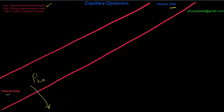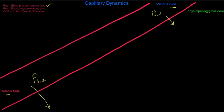Now let's look at the pressure on the venous end. That arrow is going to be a little smaller, because by the time the blood pressure gets to this side, the hydrostatic pressure on the venous end is going to be lower — a lot of the energy has been used up in driving the fluid through the capillary network.